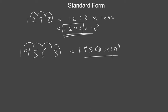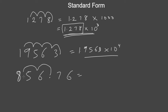For decimal numbers in standard form: take 856.76. The decimal point is already visible. Count how many times you need to move it to position it after the first digit — that's two places. So the answer is 8.5676 times ten to the power of two.